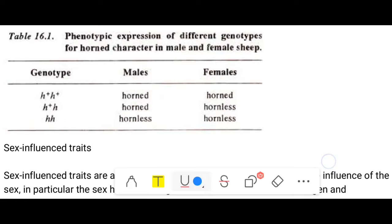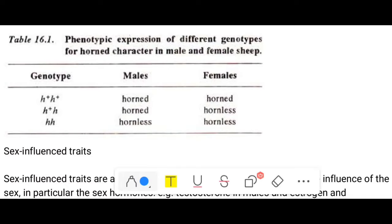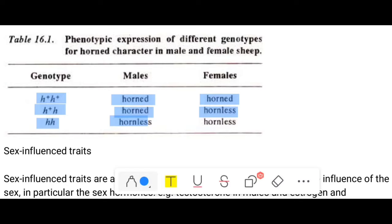Here we observe the phenotypic expression of different genotypes for horned character in male and female sheep. With genotype H+ H+ (wild type), both males and females are horned. With the hybrid genotype H+ H, the male is horned but the female is hornless. And with genotype H H, both the female and the male are hornless. This is what we call a sex-limited disorder.